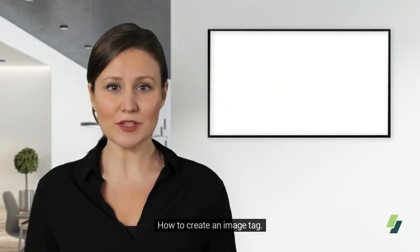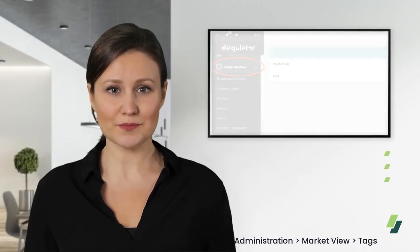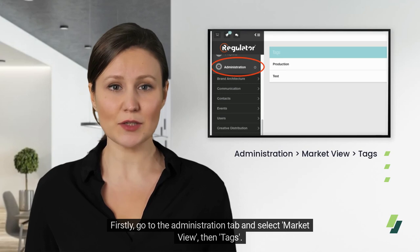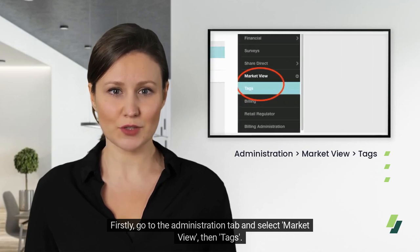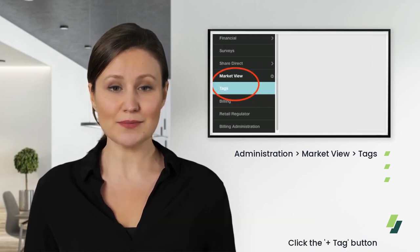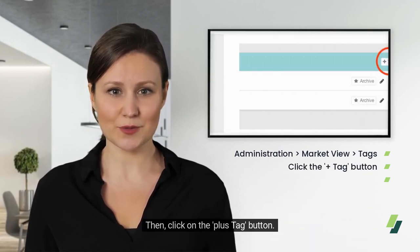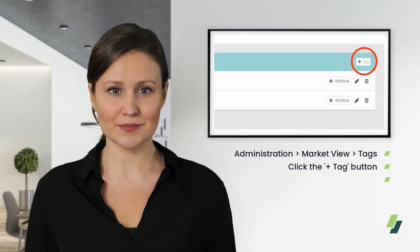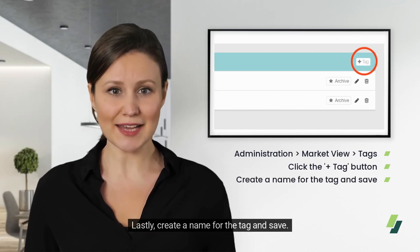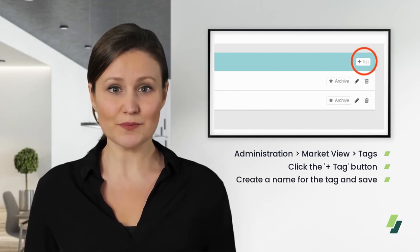How to Create an Image Tag. Firstly, go to the Administration tab and select Market View, then Tags. Then, click on the Plus Tag button. Lastly, create a name for the tag and save.